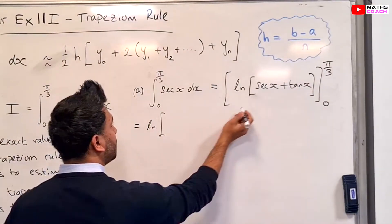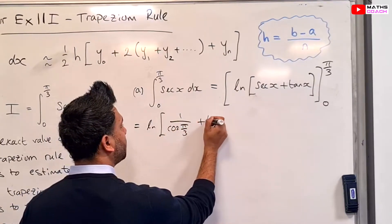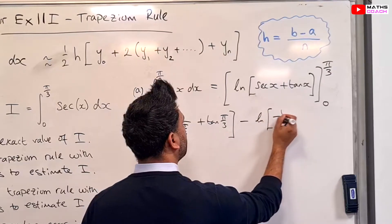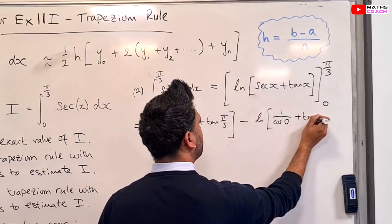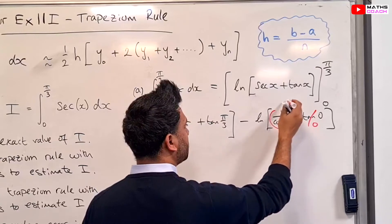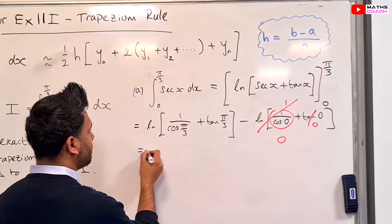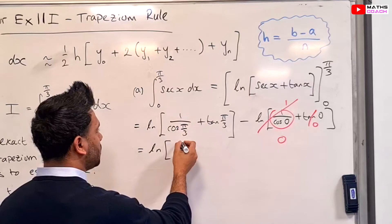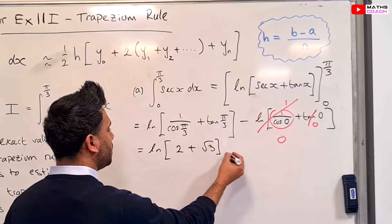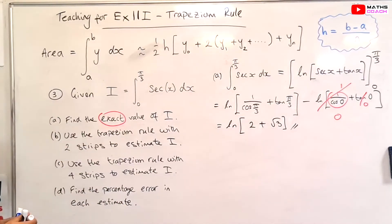We have ln of sec — that is 1 over cos of pi by 3 — plus tan of pi by 3, minus ln of 1 over cos of 0 plus tan of 0. Well, tan of 0 is 0, cos of 0 is 1, so 1 over 1 is just 1, and ln of 1 is equal to 0, so that goes away. So 1 over cos of pi by 3, or sec of pi by 3, is 2, plus tan of pi by 3 is root 3. So ln(2 + √3) is our exact answer to this integration.